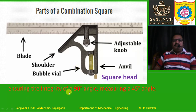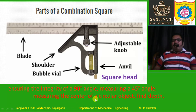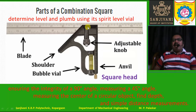The combination square is used for ensuring the integrity of 90-degree angles — the anvil surface is at 90 degrees to the blade — and for measuring 45-degree angles using the shoulder. You can also find the center of a circular object, measure depth, use it for simple distance measurements, and determine level and plumb because the spirit level vial is provided along with the square head.